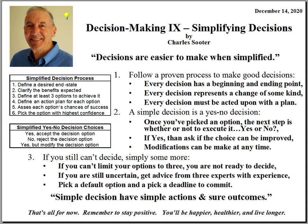I'm going to refer you back to what I consider to be the simplest of all decisions: yes/no decisions. Notice that the simplified decision process ends with step six — pick the option with the highest confidence. That doesn't necessarily mean that you run out and implement it. Now you're faced with a yes or no decision, and after some contemplation and incubation, you have a decision to make whether to implement it: yes — accept this option and implement it; no — reject this option; or three — something in between: accept but modify the decision option in some way that makes it better.